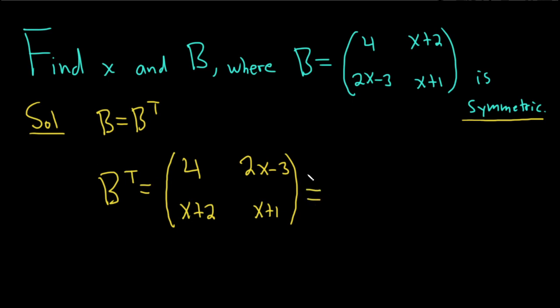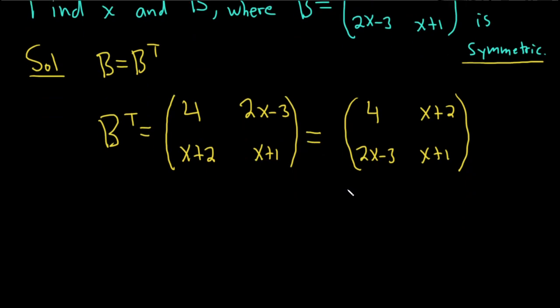And B is symmetric, so it's equal to its transpose. So we'll set this equal to B: 4, x+2, 2x-3, x+1. Alright, now we can set everything equal. Two matrices are equal when their entries are equal.